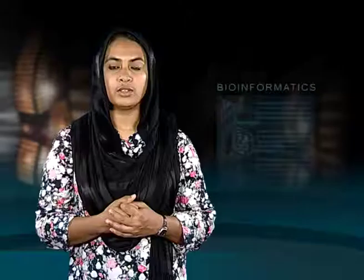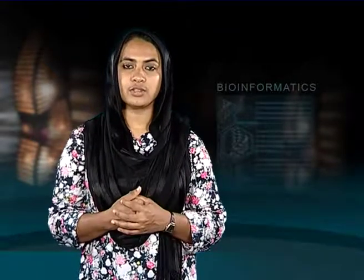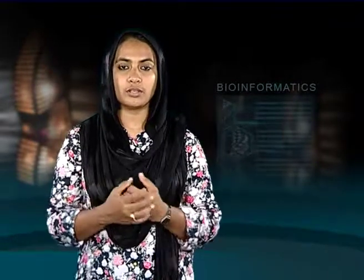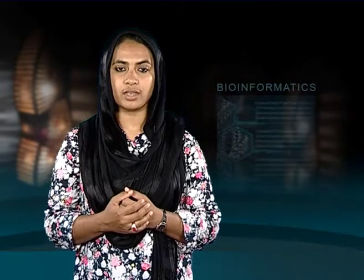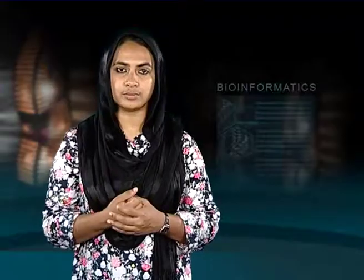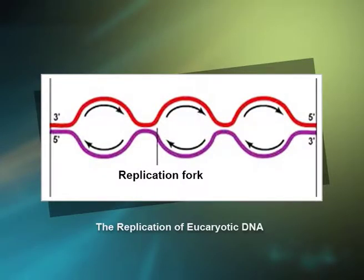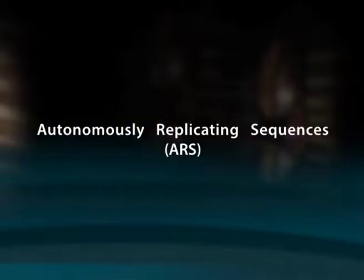In eukaryotes, eukaryotic DNA is linear and much longer than prokaryotic DNA. Many replication forks must copy eukaryotic DNA simultaneously so that the molecule can be duplicated in a relatively short period. Many replicons are present, with an origin about every 10 to 100 micrometers along the DNA. Replication forks move outward from these sites and eventually meet forks copying adjacent DNA stretches, allowing a large molecule to be copied quickly.